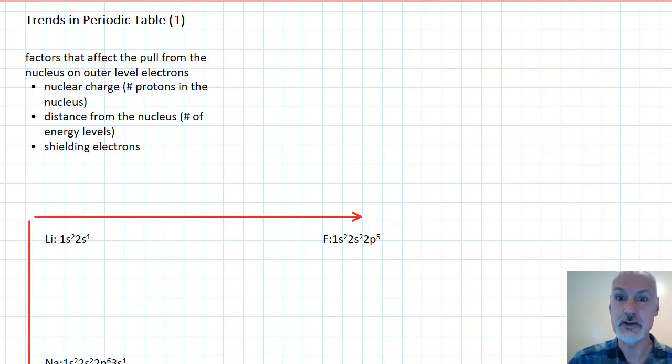Hi. In this program we're going to take a look at the trends in the periodic table, and the program has been divided into two parts. In the first trends we're going to take a look at the atomic radius, ionization, electronegativity, and electron affinity.